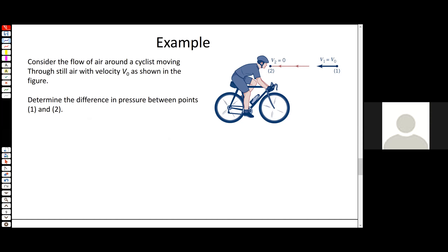Let's talk through the assumptions. First, even though the air is still and the cyclist is moving forward, it's easier to reverse it and assume the cyclist is still and the air is coming around the cyclist at constant speed v-naught. Second, we can imagine a streamline between points 0.1 and 0.2 since there's nothing obstructing the flow. Third, at point 0.2, right at the cyclist's nose, that's a stagnation point, because the velocity comes to zero there by the no-slip condition — a fluid has to have the same velocity as any surface it contacts.